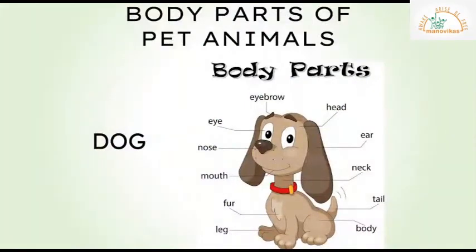We have learned about our own body parts, so today let's learn the body parts of some pet animals. Can you see this picture of a dog? Let's see the different parts of its body. The dog has eyes, nose, tongue, stomach, paws, ears, mouth, neck, back, tail, and legs.